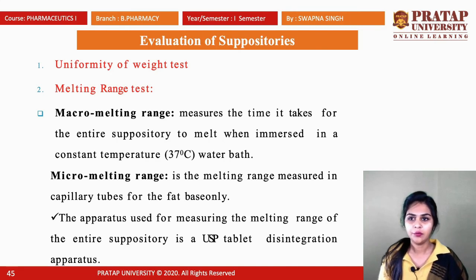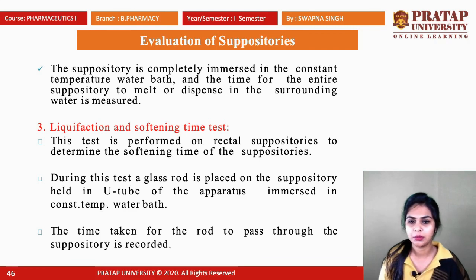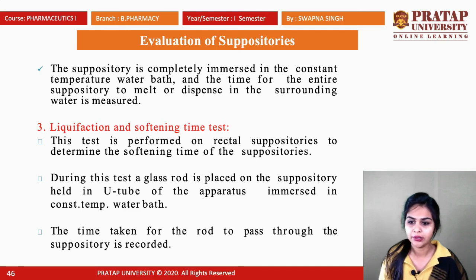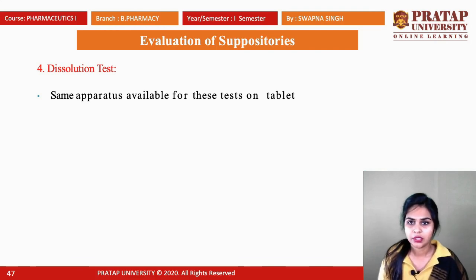Evaluation parameters for suppositories: first is uniformity of weight test; second is melting range, classified into macro melting (the time for the entire suppository to melt when immersed in a constant temperature water bath) and micro melting (measured by capillary tube for fat-based suppositories only). Third is the liquefaction and softening time test, performed on rectal suppositories — a glass rod placed on the suppository held in a U-tube immersed in a constant temperature water bath, and the time for the rod to pass through is recorded. The last parameter is the dissolution test, using similar apparatus to the tablet dissolution apparatus.